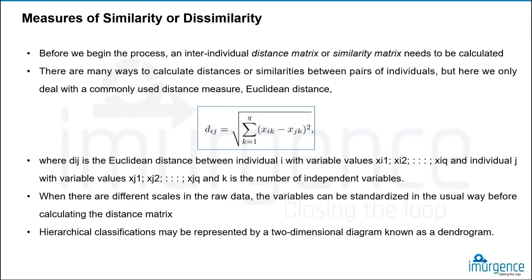Hierarchical classification may be represented by a two-dimensional diagram known as a dendrogram, which basically tries to show you the data in a hierarchical order. But again, this has some limitation because if the data becomes huge, the dendrogram is not very helpful. So in principle, most of the time you do k-means clustering, and not often you go with dendrograms.